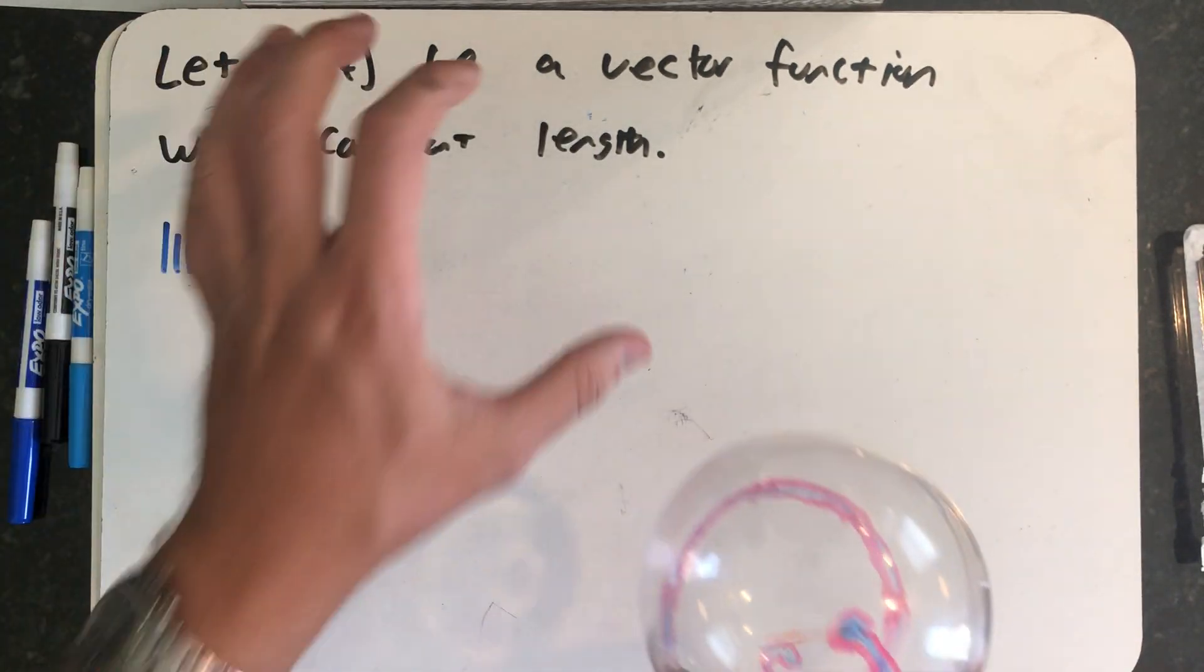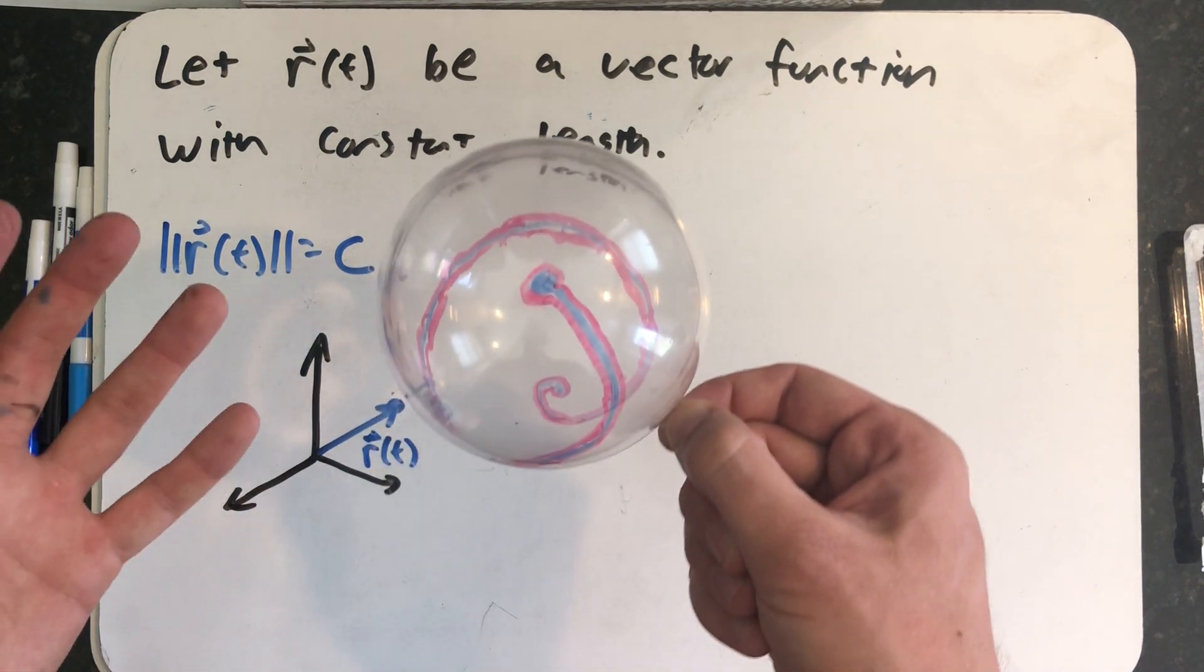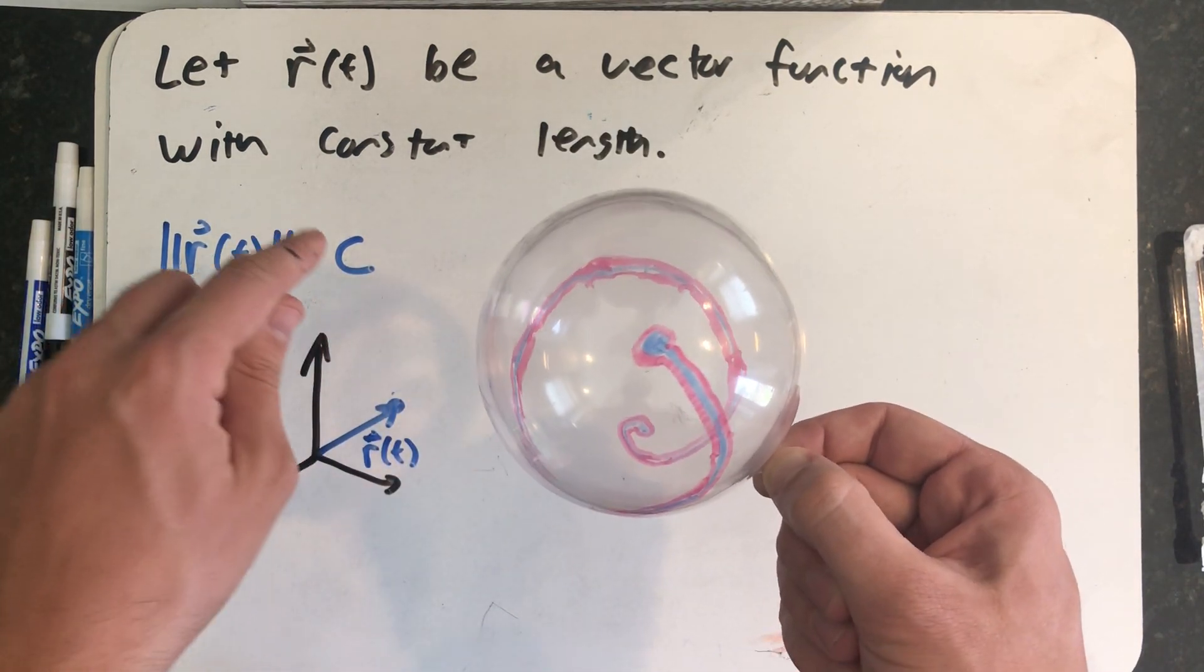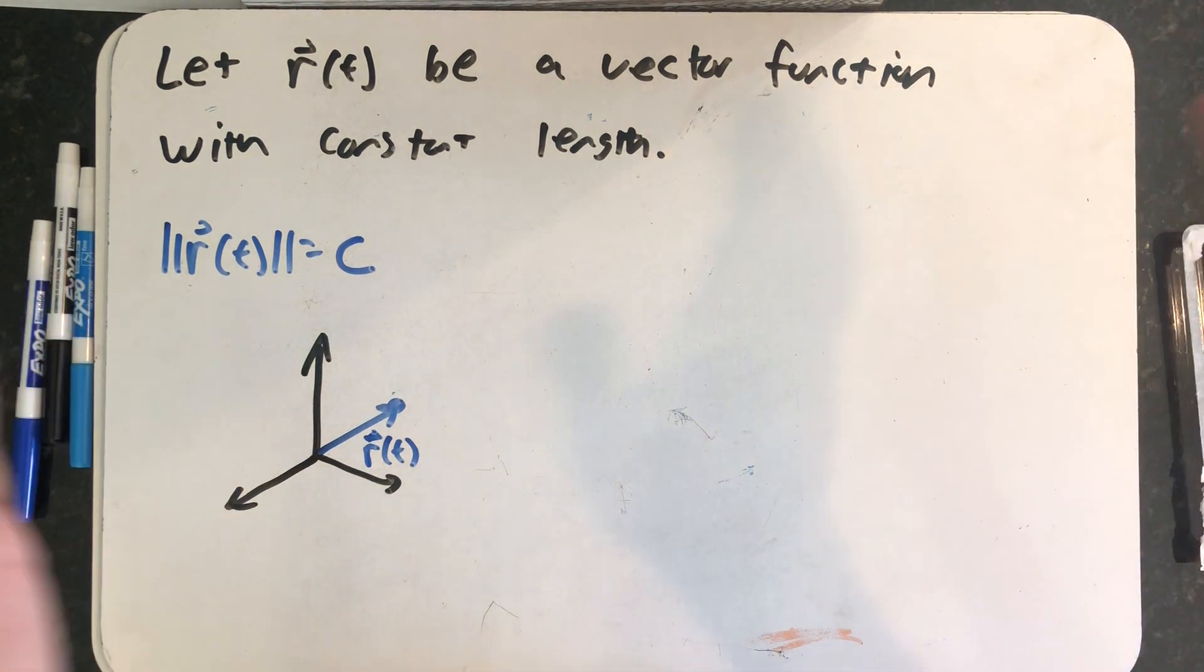R of t is a vector function of constant length means it's drawing a curve in space that has to live on a sphere of radius c because that's what vector functions do. That's what position vectors do.